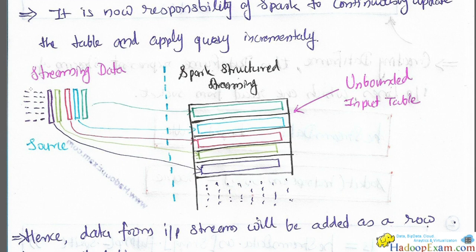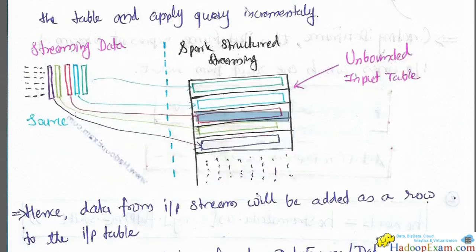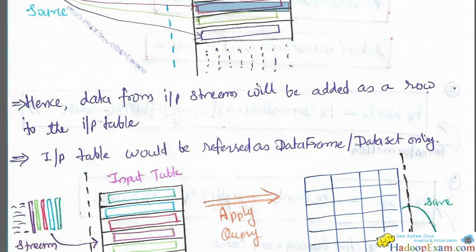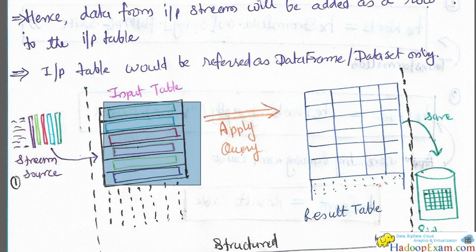This is your streaming data, which is the source — the input you are getting. Assume you are getting one record in different colors. This is your Spark Structured Streaming, where you receive this data. Each row is added into the table. This is the unbounded input table we discussed previously. Each row is added as data from the input stream into the input table. The input table is referred to as a DataFrame or Dataset — in Scala it can be a Dataset, in PySpark it is a DataFrame.